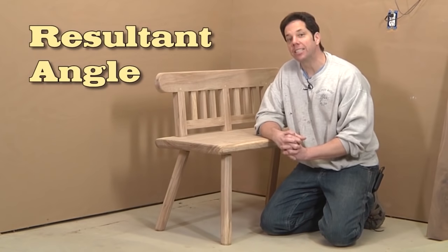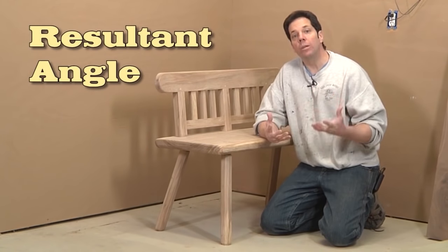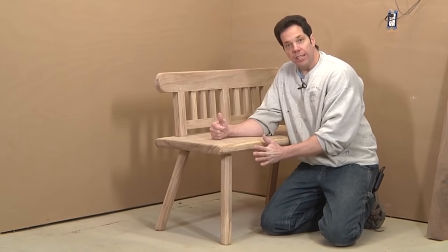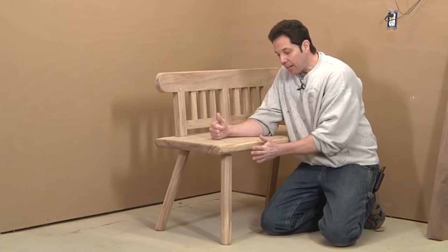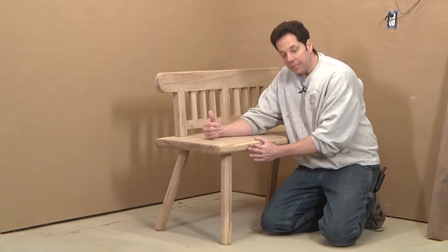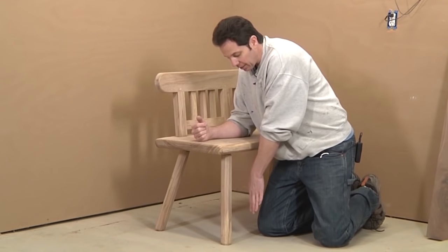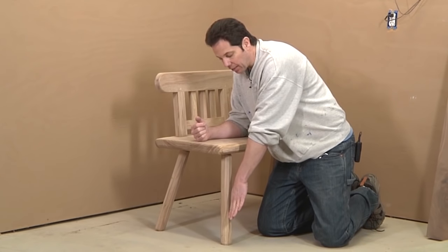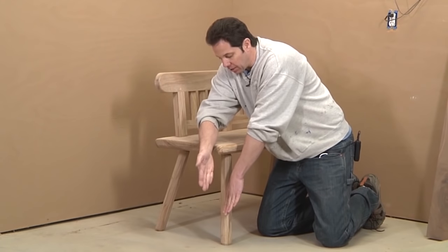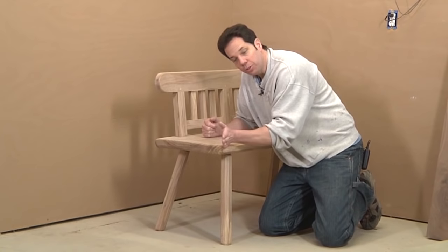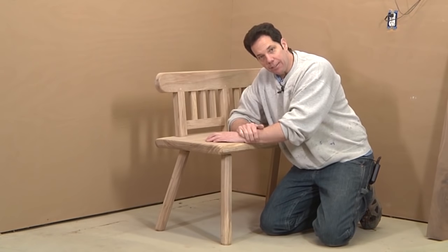So the third angle is the resultant angle. And what this is, it's kind of a combination of both the splay looking at it from the front and the rake looking at it from the side. So that gives you your resultant angle.